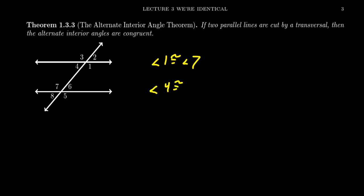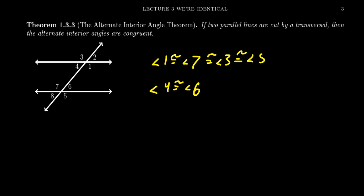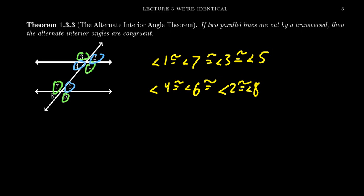Notice that angle one and angle three are vertical angles, so one and three are congruent to each other. And so angle seven is also congruent to angle three. Likewise, five and seven are vertical angles, so seven and five are congruent. Continuing on, four and two are vertical angles so they're congruent, and eight and six are congruent as well. So you end up with four congruent to six, congruent to two, congruent to eight. With this transversal diagram you get two families of congruence: the odd ones — one, three, five, and seven — are all congruent to each other, and the even ones — two, four, six, and eight — are all congruent to each other as well.